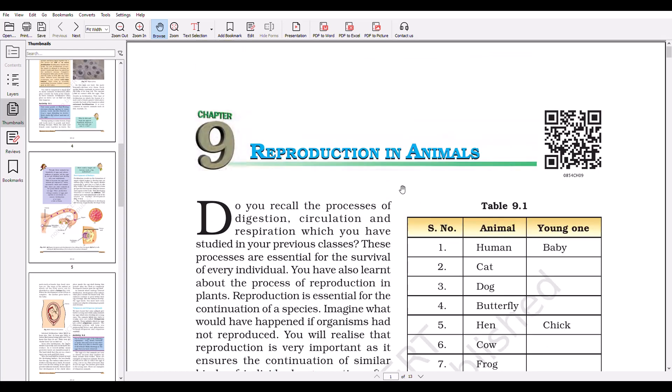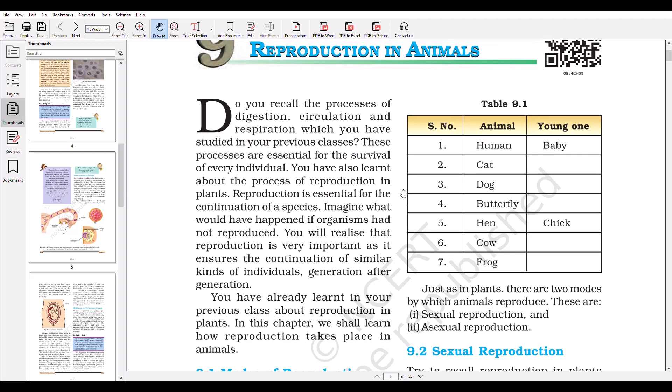Chapter 9: Reproduction in Animals, Class 8. In this chapter we shall learn how reproduction takes place in animals. Animals give birth to their young ones. For example, humans give birth to babies. In the same manner, cats, dogs, and cows give birth to their young ones, while other animals like hens, ostriches, and crows lay eggs which hatch into chicks. They don't directly give birth to their young ones; they first lay eggs which hatch under proper conditions.